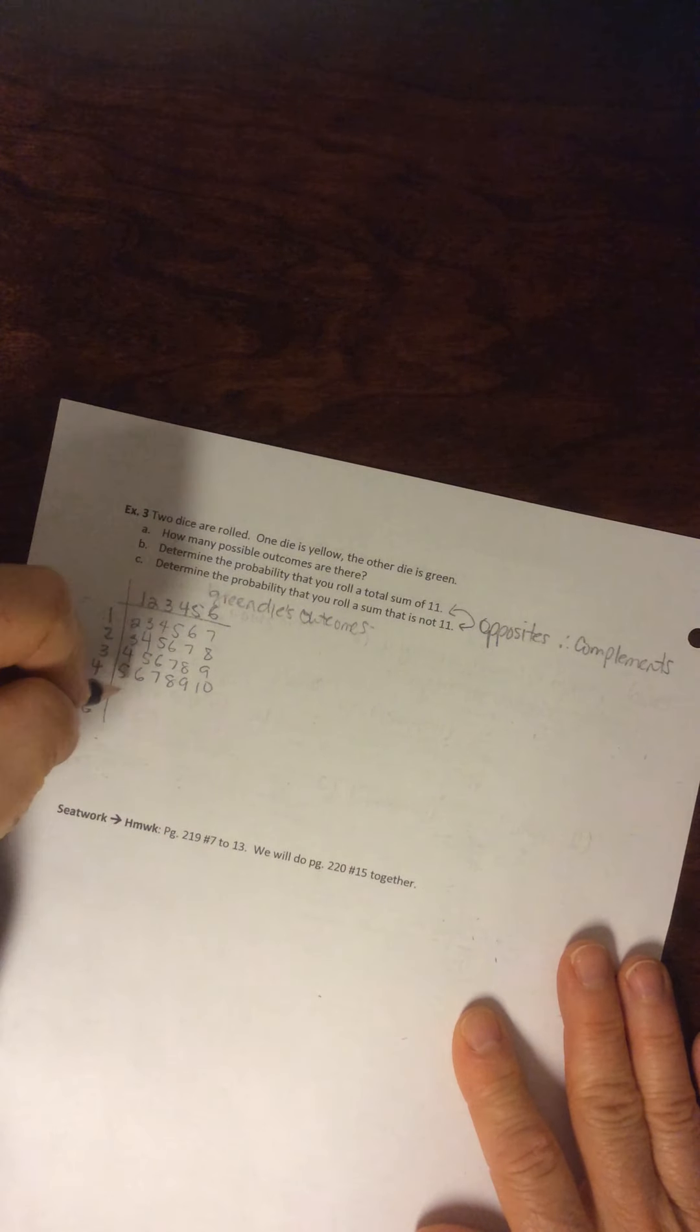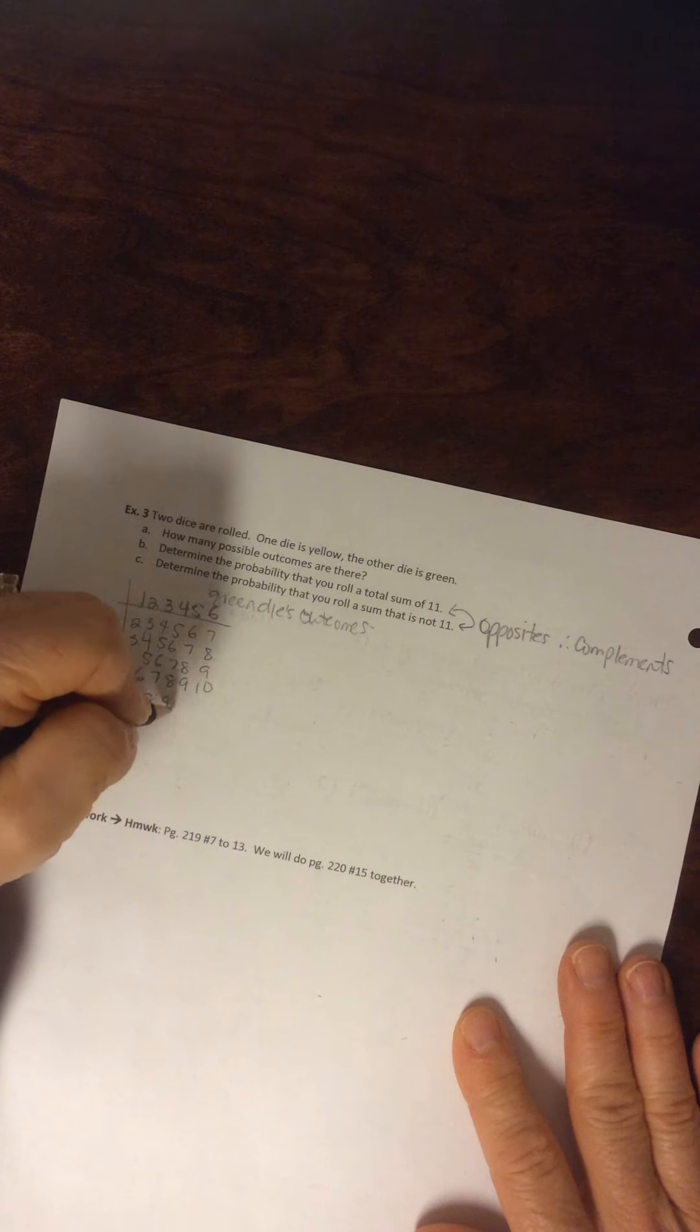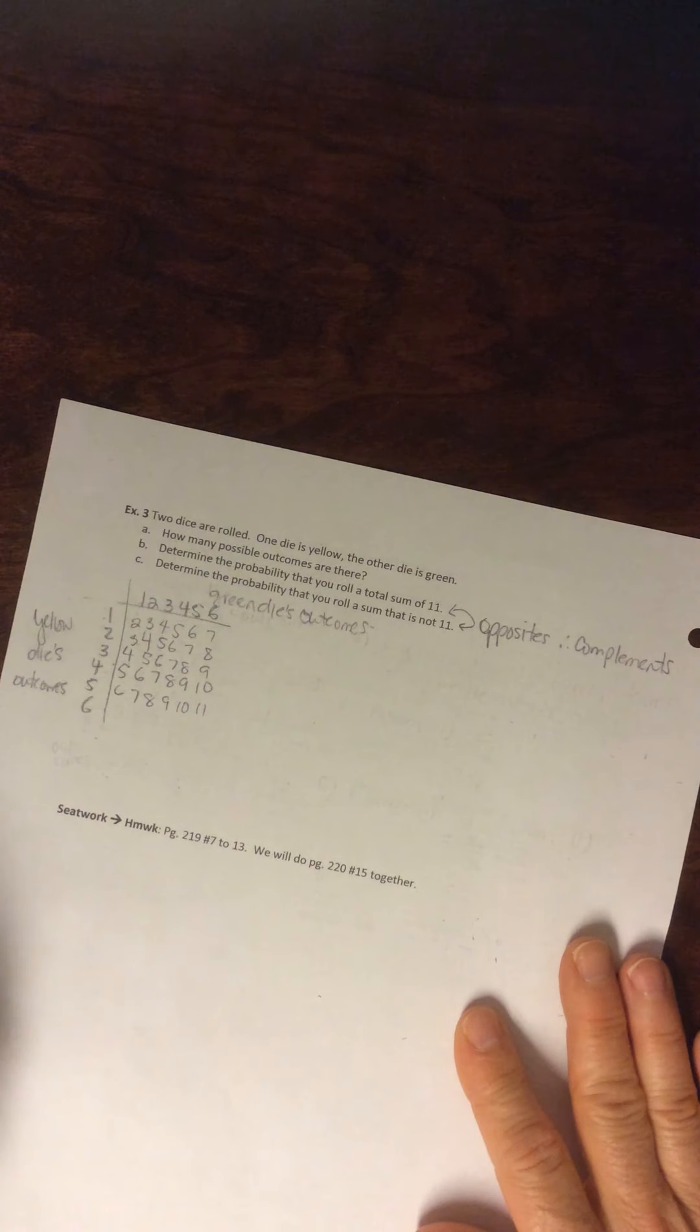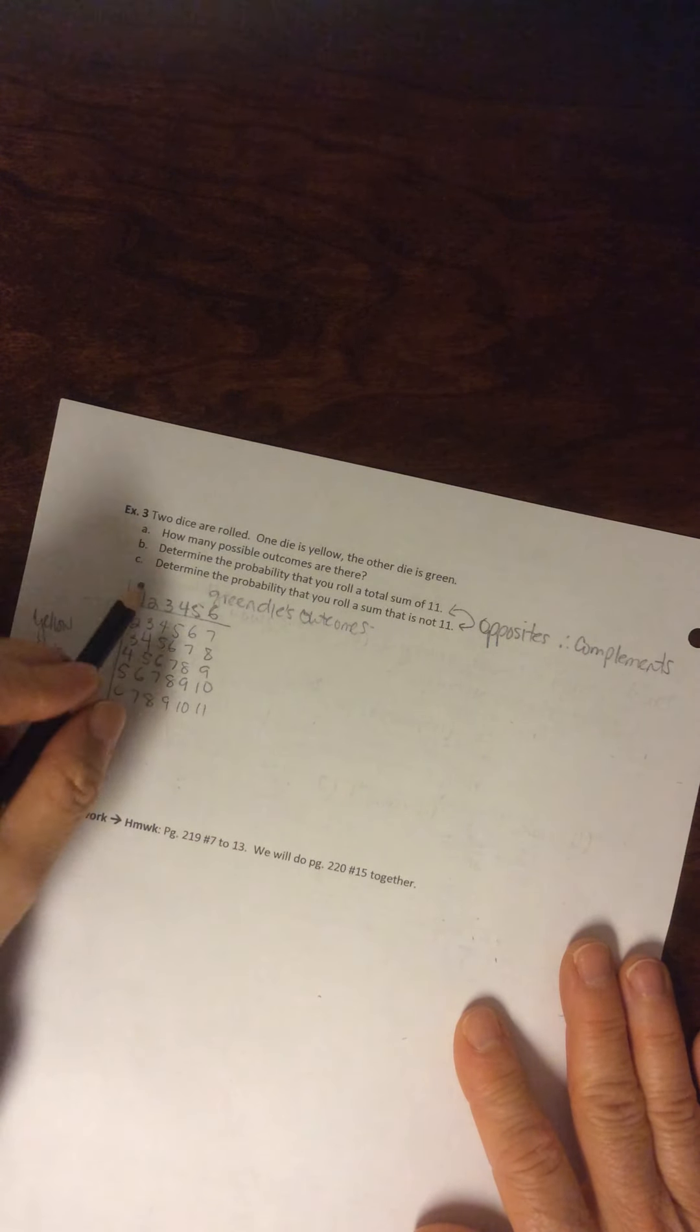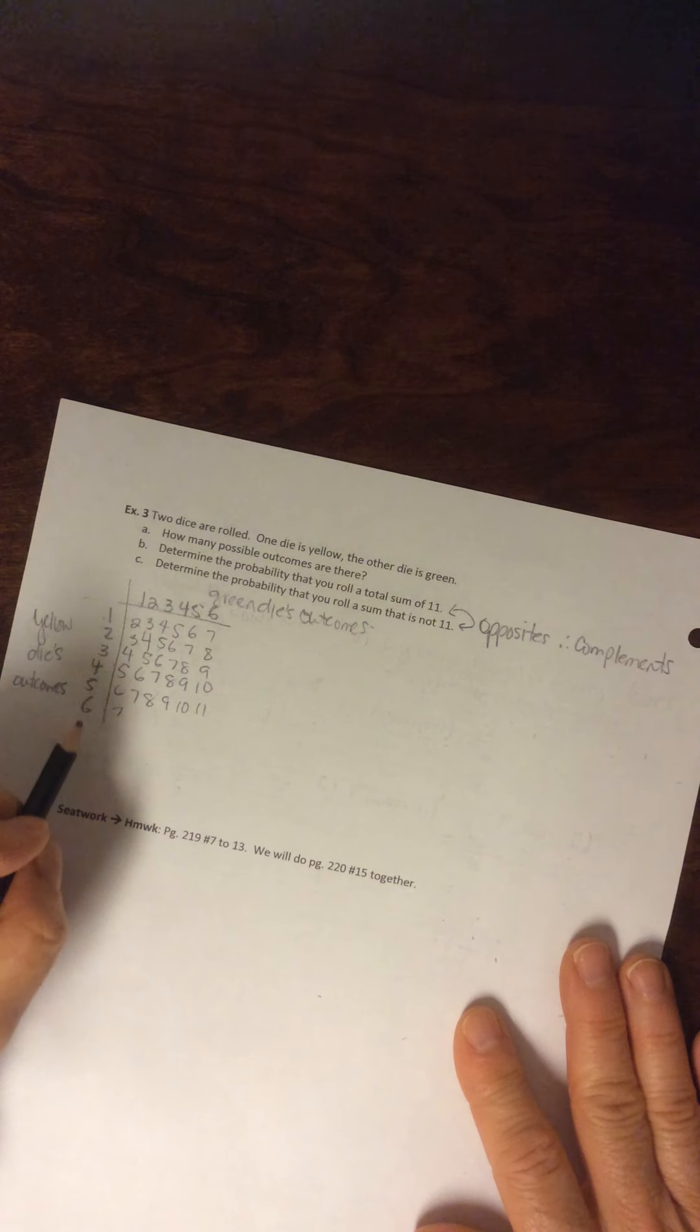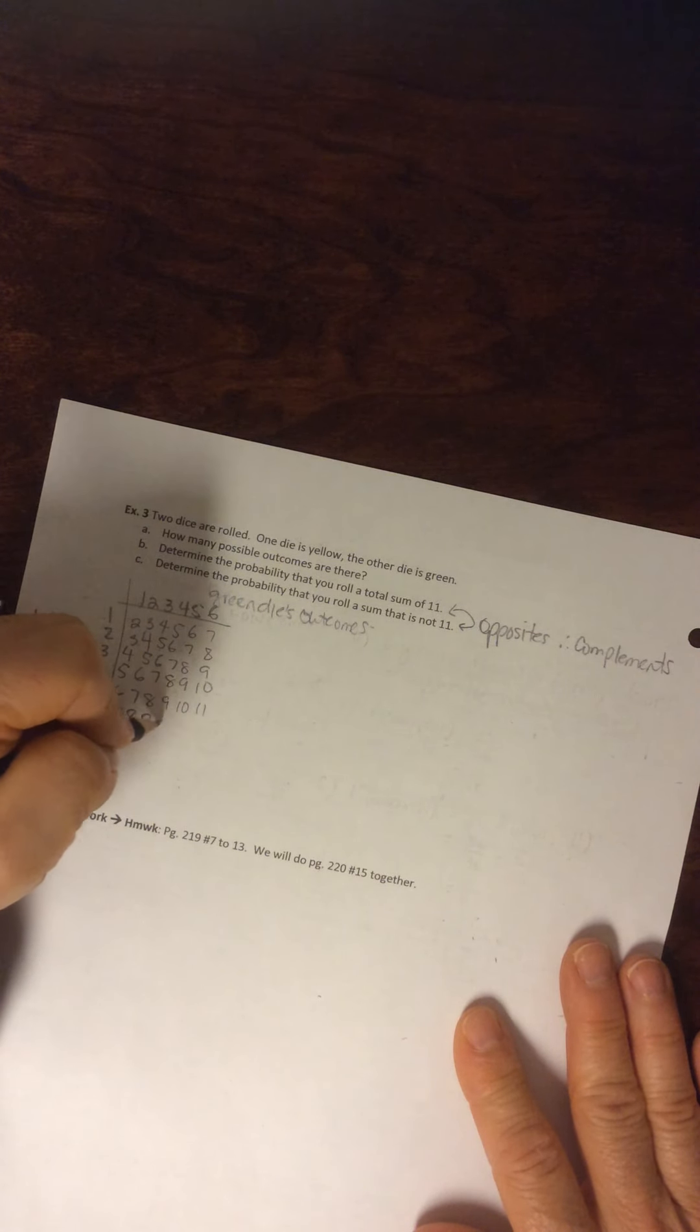5 plus 1 is 6, 2 plus 2, sorry, 5 plus 2 is 7, 8, 9, 10, 11, 12, okay?